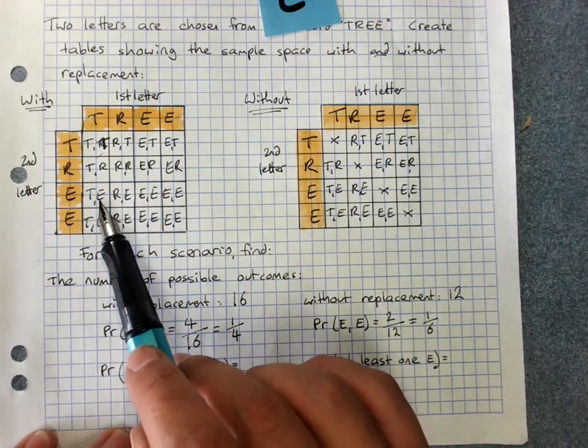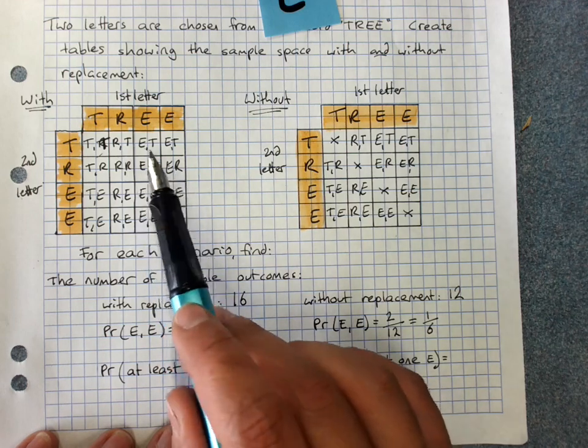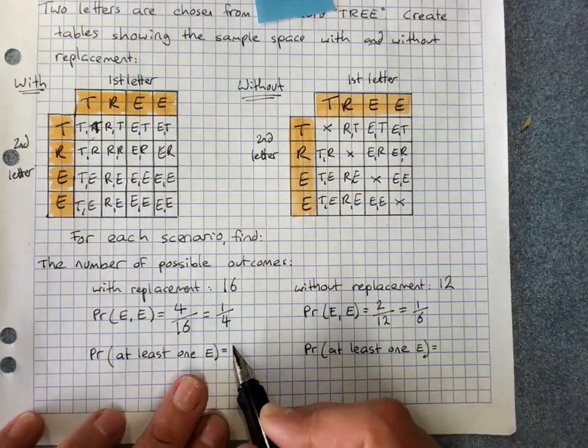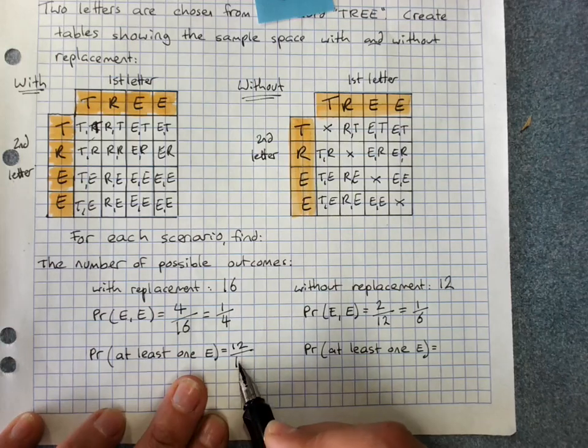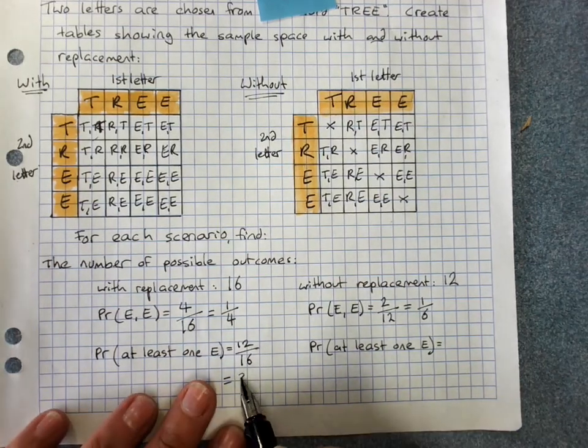So just learn the language there. How many of them have at least one E? 1, 2, 3, 4, 5, 6, 7, 8, 9, 10, 11, 12 in this one. 12 out of 16. Simplifying that down to 3 out of 4.